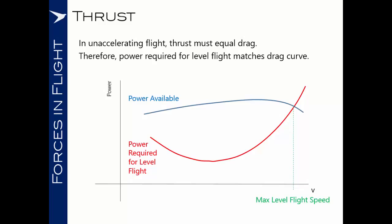As we get to the lower speed end of this graph, we're limited by the maximum amount of lift that can be produced by the wings to fly at a particularly slow airspeed in level flight. And also, as the drag increases due to the lift-dependent drag, the amount of power that we have available at those low airspeeds to maintain our level flight.